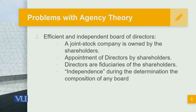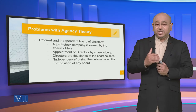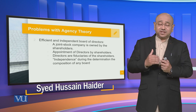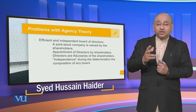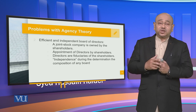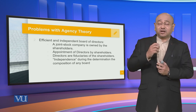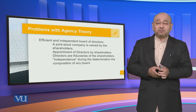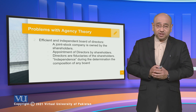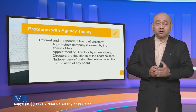Another important element is having an efficient and independent board of directors. When that is not in place, it tends to cascade a lot of complications and leads to financial loss. In a joint stock company owned by the shareholders, directors are appointed by the shareholders and are fiduciaries of the shareholders, with independence during the determination of the board's composition. The creation of committees and subcommittees — and ensuring they are effectively working for the betterment of the organization — becomes a primary responsibility of the management.